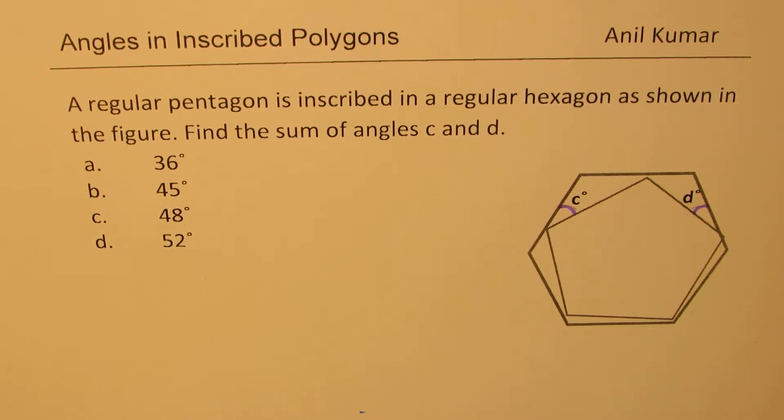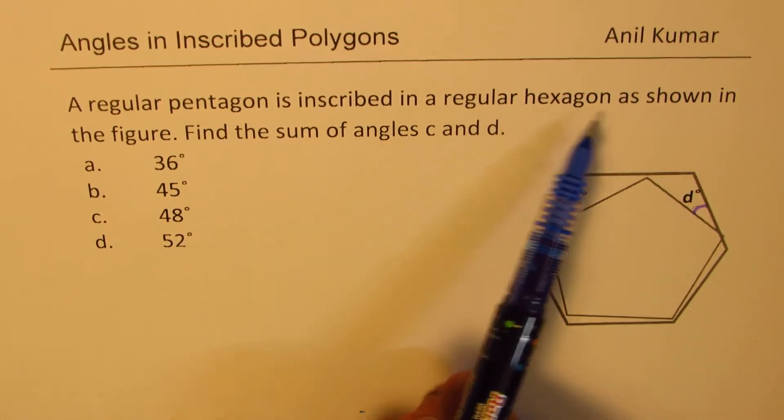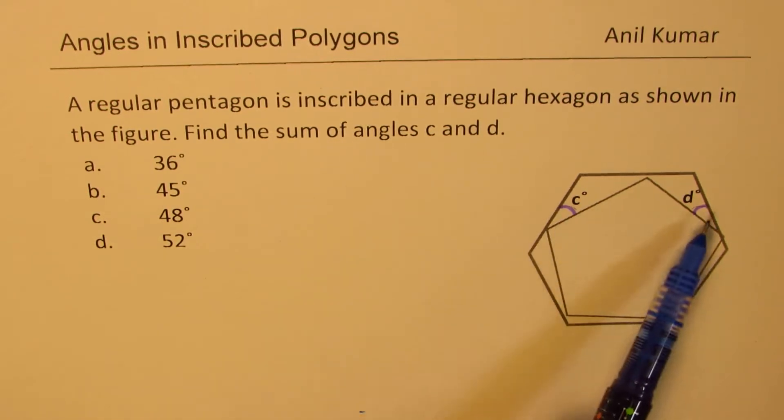I've taken regular pentagon and hexagon in this particular example. The question is, a regular pentagon is inscribed in a regular hexagon as shown in the figure. Find the sum of angles C and D. Four choices are given to you. You can always pause the video, answer the question, and then look into my suggestions.